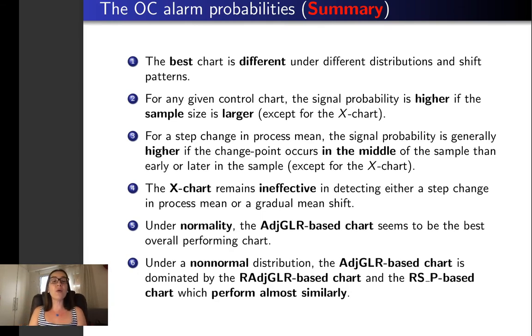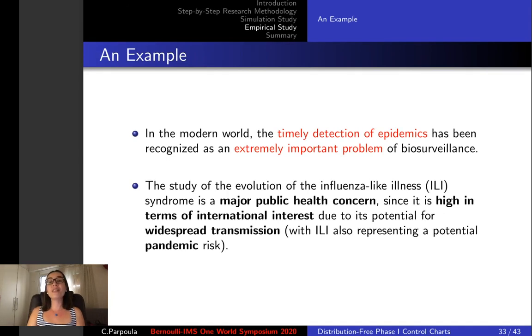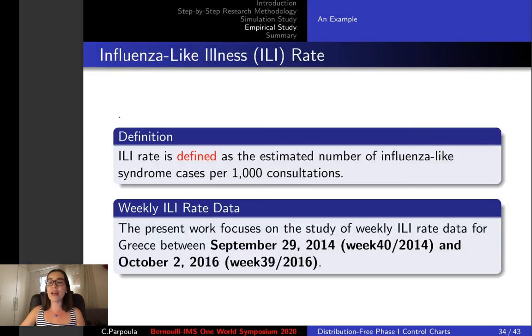We then proceed with a real case study for the timely detection of epidemics. In particular we studied the evolution of the influenza-like illness syndrome, which is a major public health concern due to its potential for widespread transmission with ILI also representing a potential pandemic risk.